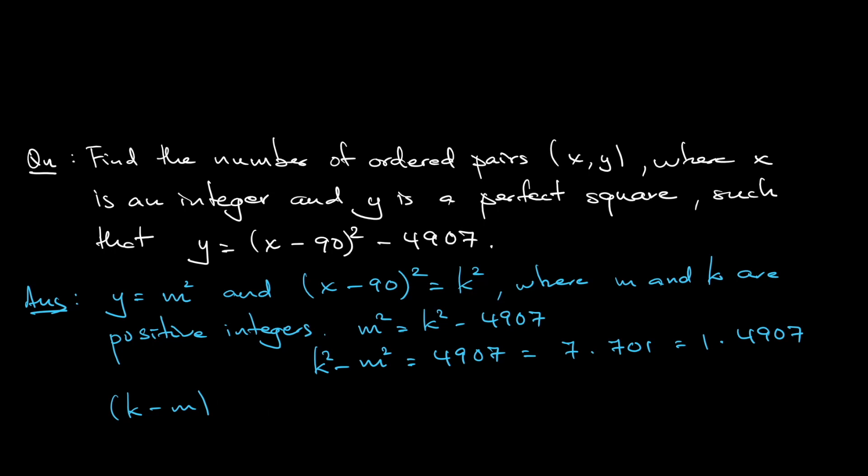So what I mean is this: k minus m, k plus m. Notice that because m is a positive integer, k minus m is the smaller number, k plus m is the larger number. So I can have the k minus m is the 1 and the k plus m is the 4907.